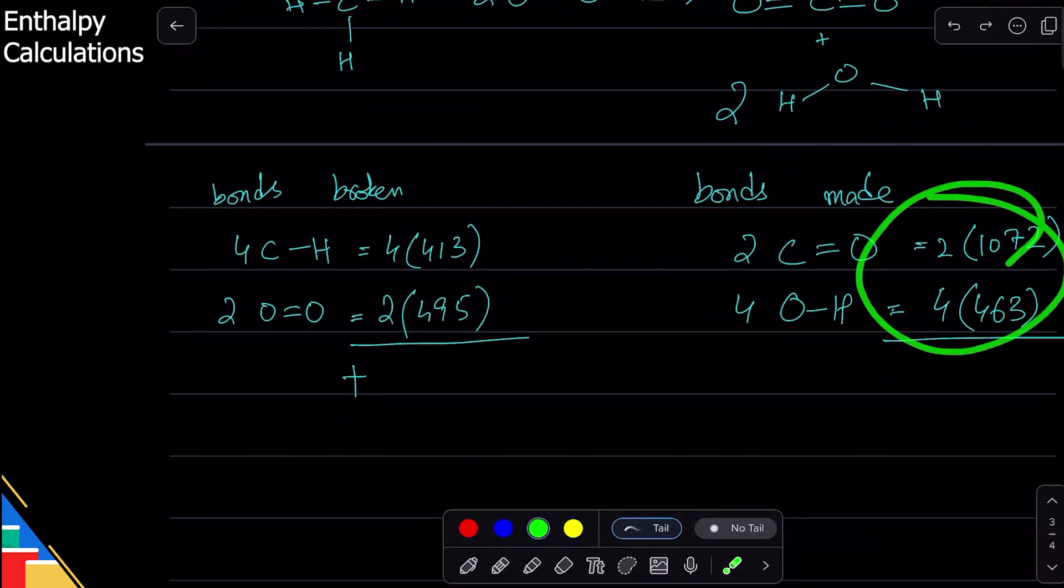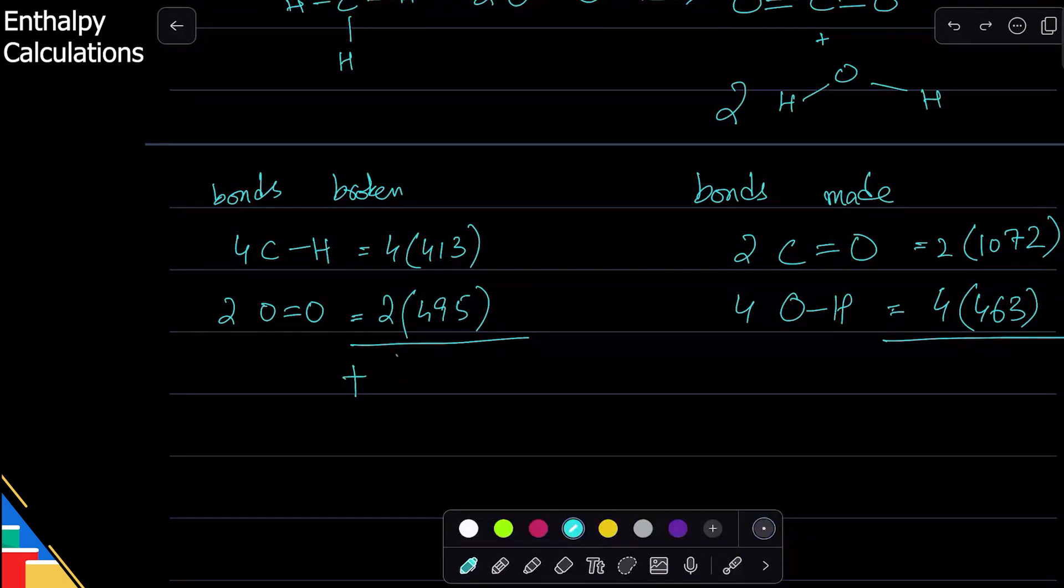Let's calculate it. 4 times 413 plus 2 times 495. This comes out to be 2642. That means the total energy absorbed is 2642 kilojoules per mole.